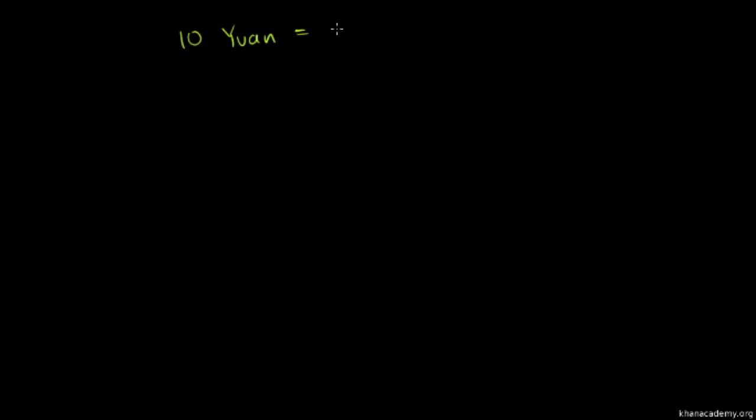So let's say the Chinese renminbi and the US dollar. The unit of exchange in China is a little confusing, because sometimes they use the word renminbi, sometimes the word won — the won is the unit of the renminbi. Let's say right now the quoted exchange rate is 10 won per US dollar, so 10 won equals 1 US dollar. Every time I say dollar in this video, I'm referring to the US dollar.